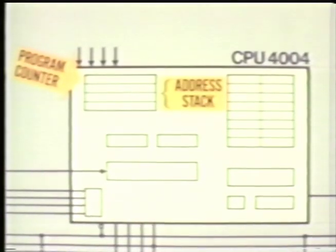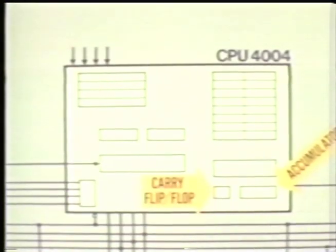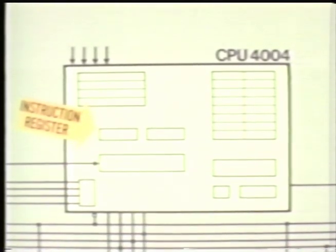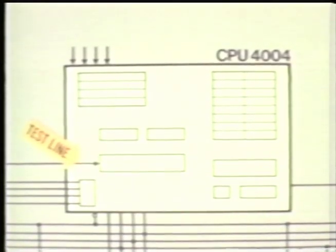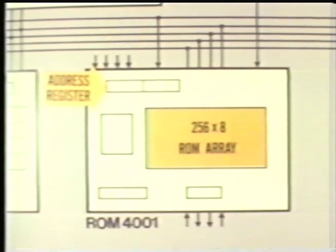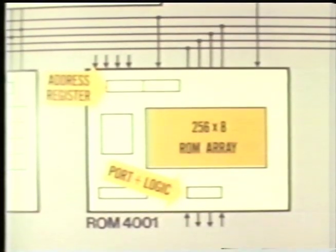The CPU contains a number of elements: a 12-bit program counter to retain the ROM address for the next instruction; a program counter address stack to save subroutine return addresses; a 4-bit accumulator with carry flip-flop; 16 4-bit general-purpose registers for temporary data storage; an instruction storage register with its instruction, execution, and control circuitry; and a test line for sampling any external signal.